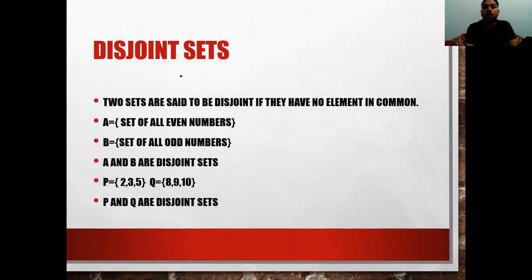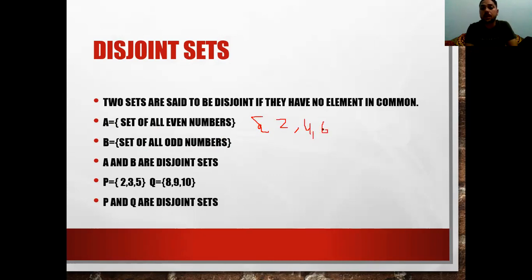Disjoint sets: two sets are called disjoint when they do not have any element in common. For example, set A is the set of all even numbers {2, 4, 6} and set B is the set of all odd numbers {1, 3, 5}. Since nothing is common between these two sets, they are disjoint sets.